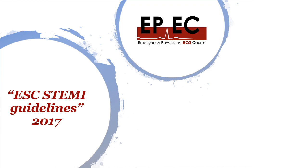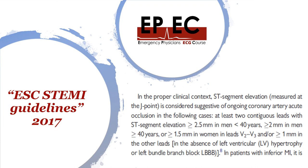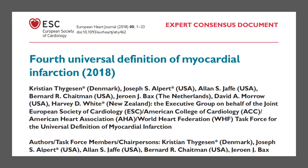The European Society of Cardiology guidelines from 2017 say you need at least two contiguous leads with ST elevation: 2.5 millimeters in men under 40, two millimeters in men over 40, and 1.5 millimeters in any woman — that applies just to V2 and V3. For all other leads, it is one millimeter or more. This is exactly the same as the American Heart Association definition.